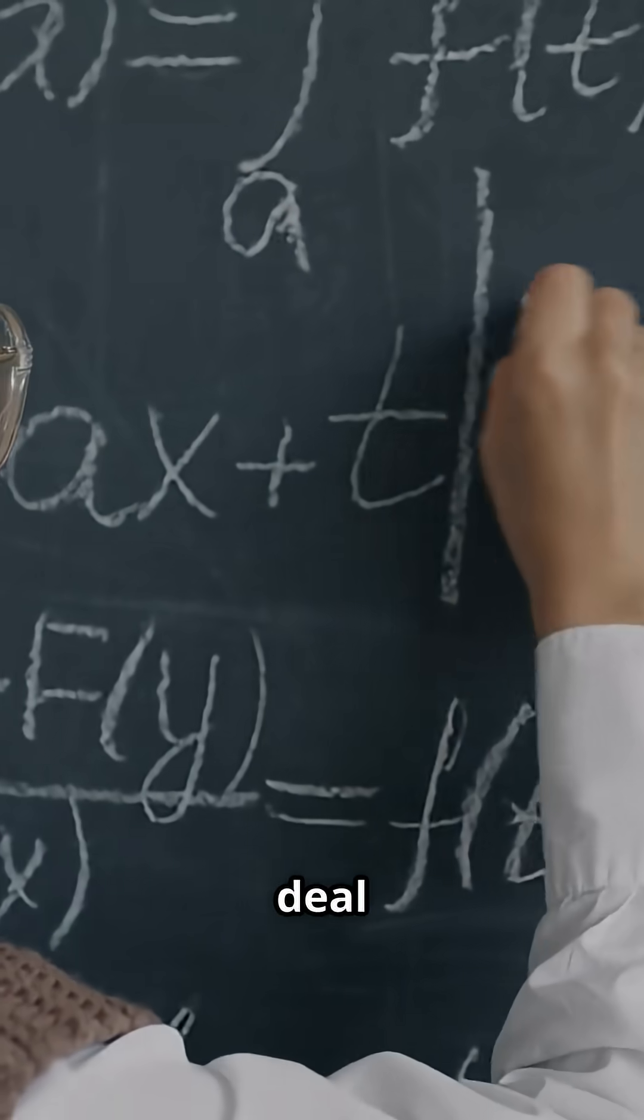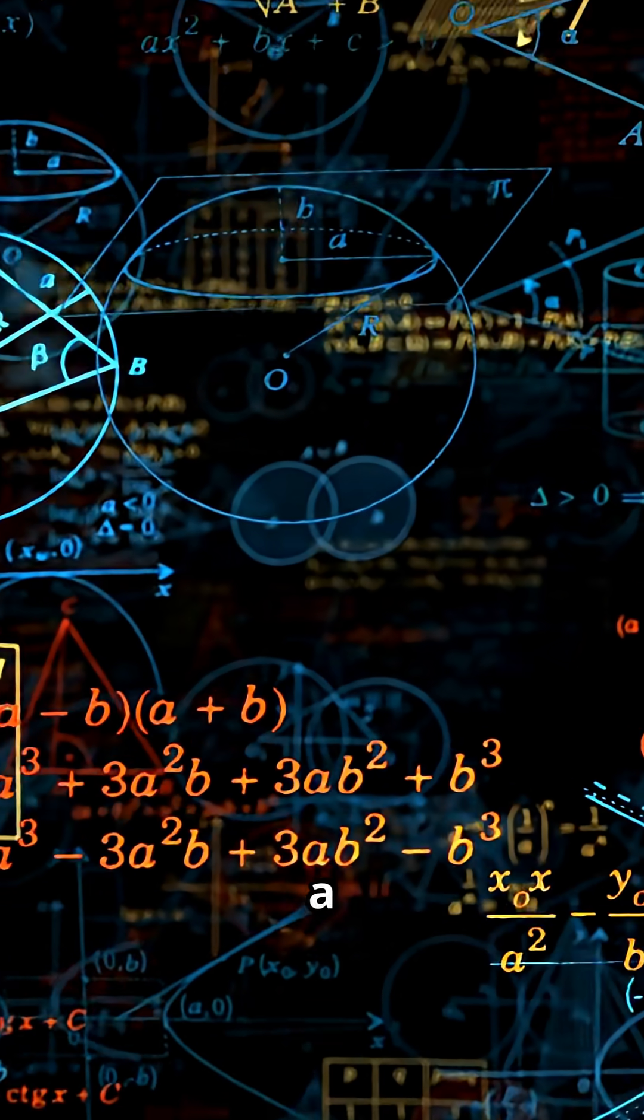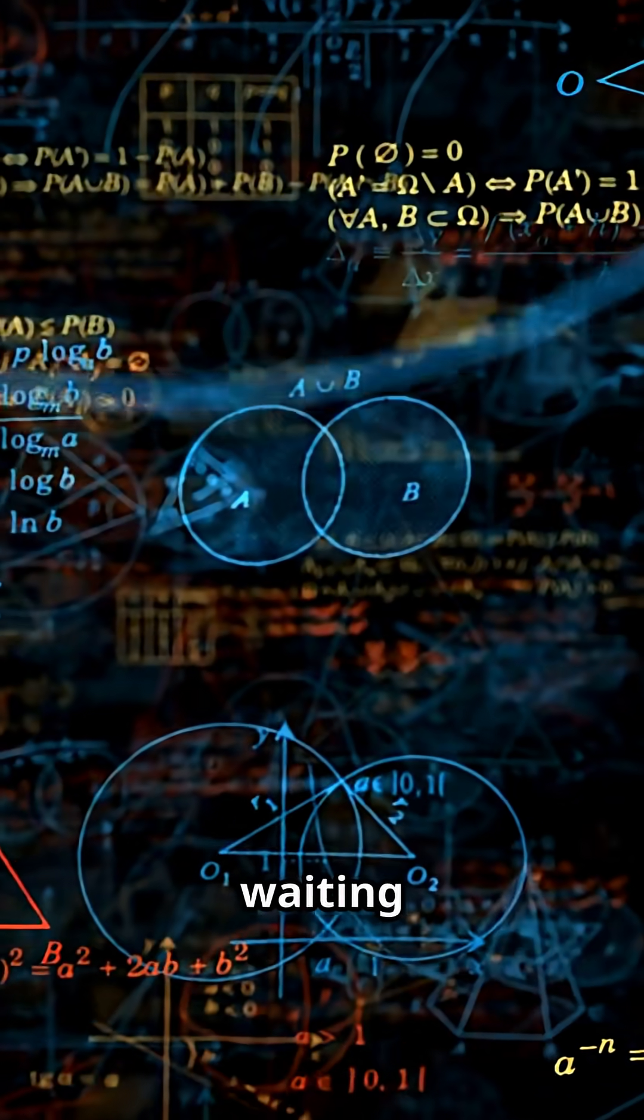So here's the deal. Platonists say math is not invented. Think about circles, prime numbers, even pi. They exist in a perfect realm of forms, waiting for us to stumble upon them. Need proof?